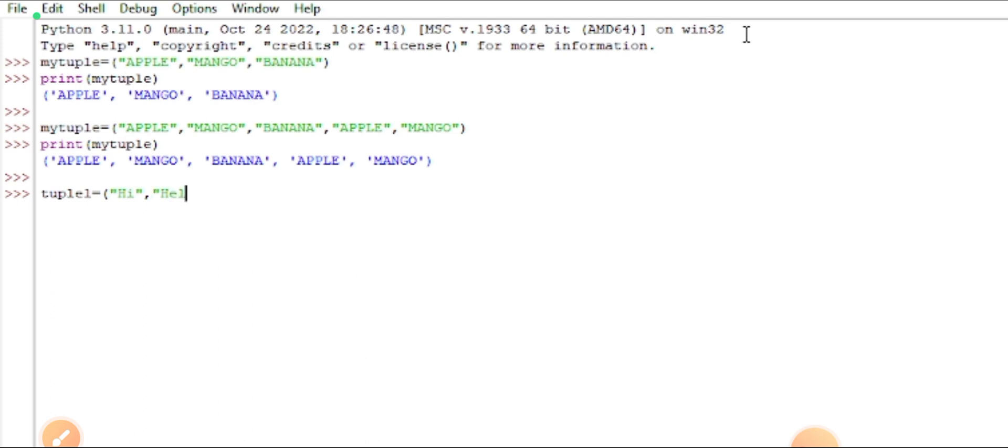Now I want to show you with different data types. Tuple 1 is equals to string data type: hi, hello. Tuple 2 is equals to 10, 20, 30.